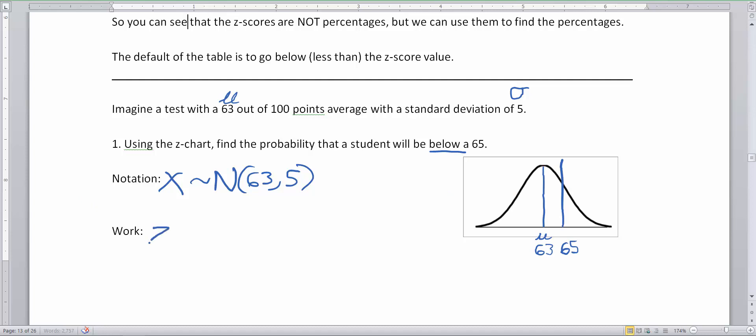Now let's do the work using the z-score formula. I use a line in my z so it doesn't look like a 2. z equals x minus mu divided by the standard deviation. My x in this case is 65, so 65 minus 63 divided by 5 gives me 2 over 5. Dividing that on my calculator, I get 0.4, and 0.4 is my z-score.